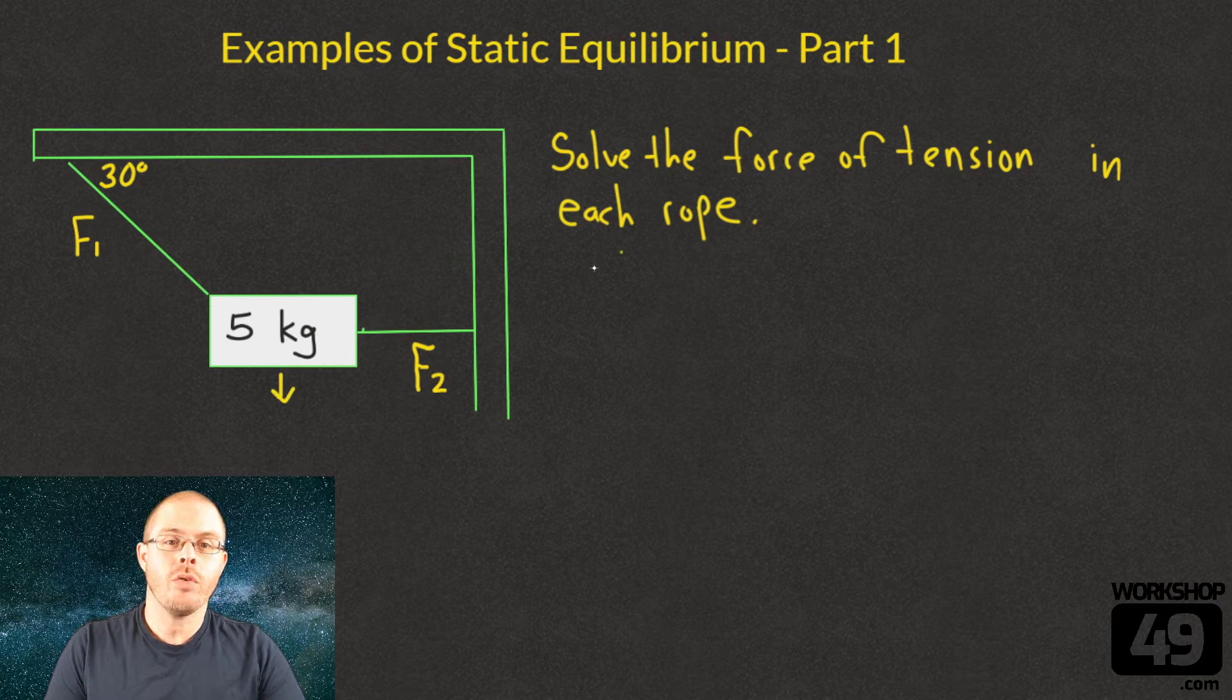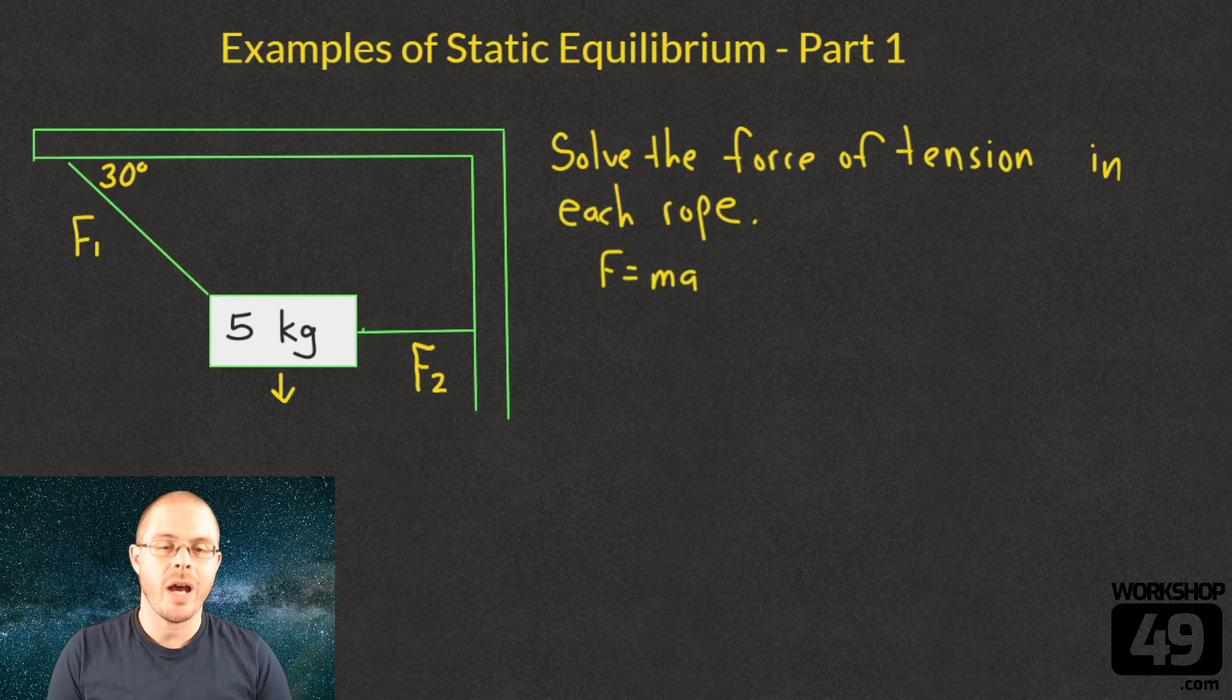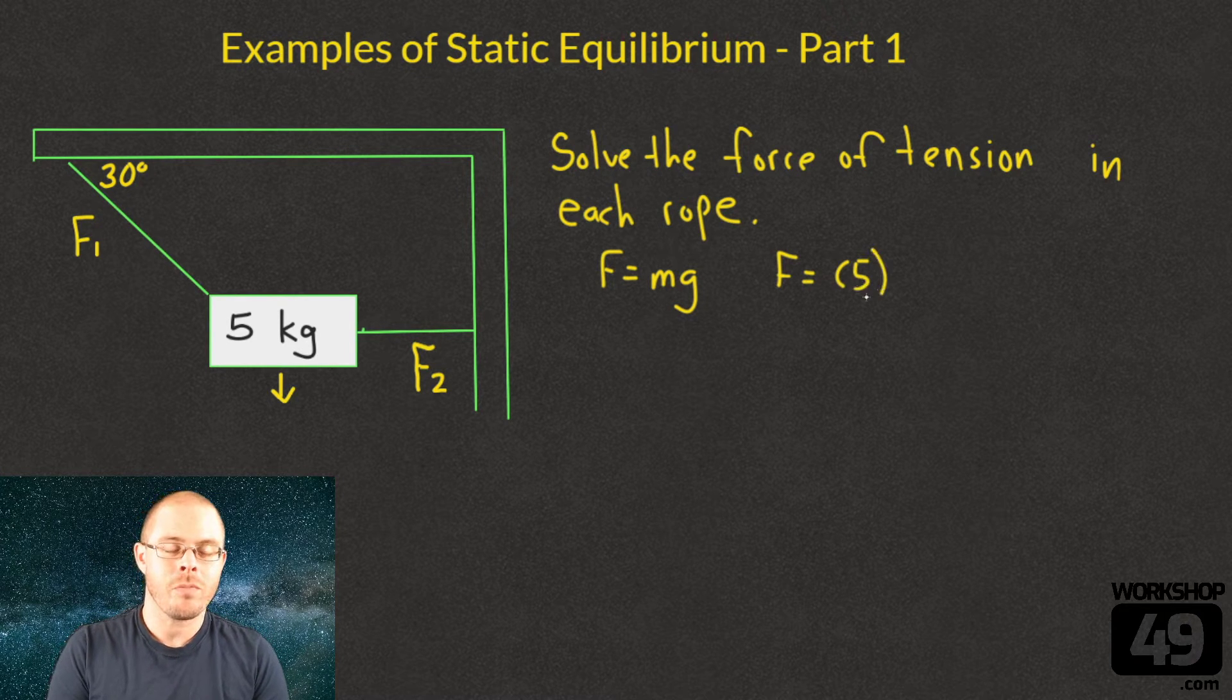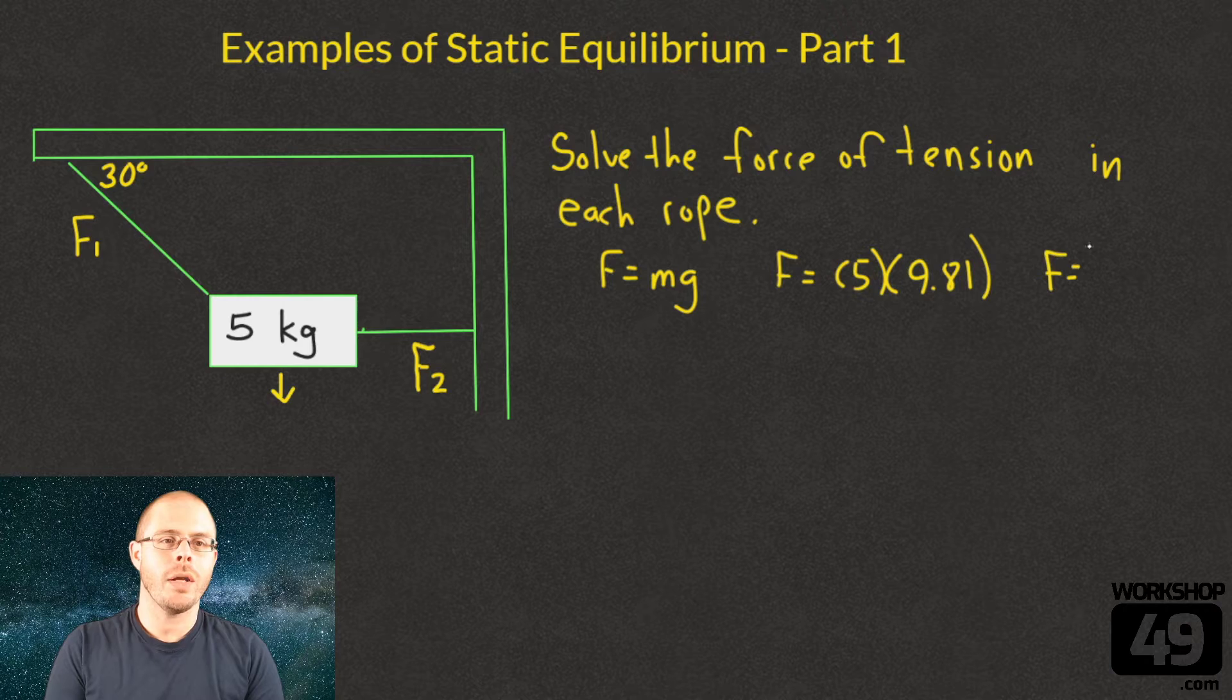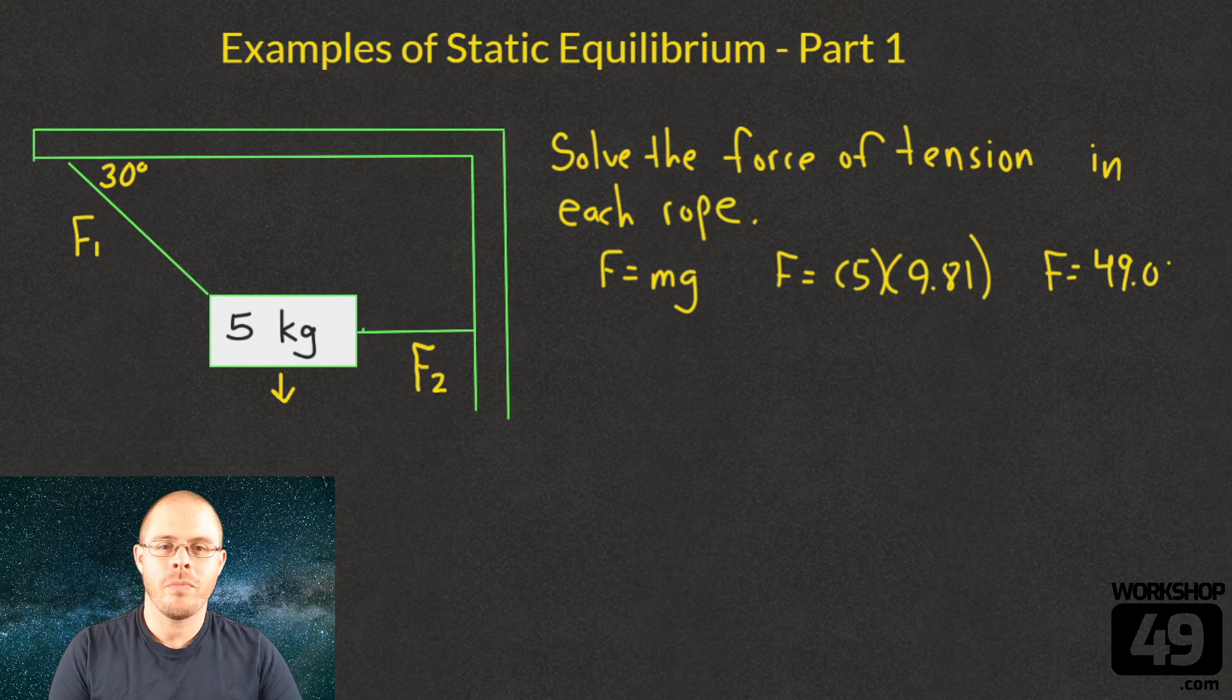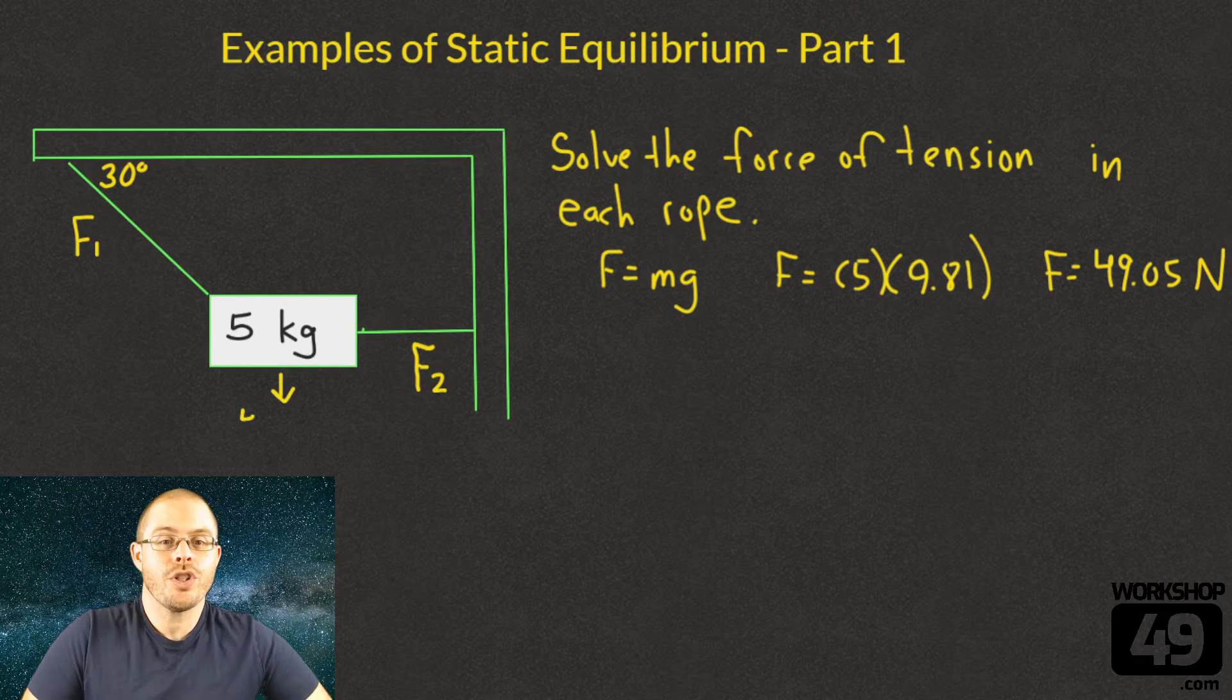The first thing we need to figure out is the force that this 5 kilogram block is trying to push down with. That's its force of gravity, F equals mg. That force is going to equal the mass 5 multiplied by the gravity 9.81, so that the force of gravity of this 5 kilogram block is 49.05 newtons. That's what's pushing down.